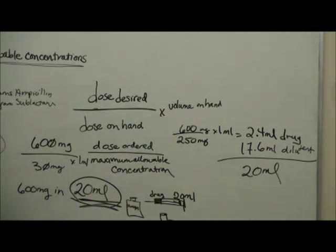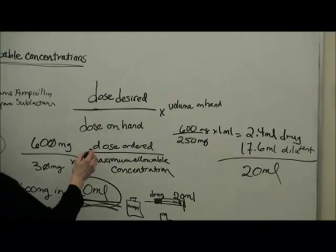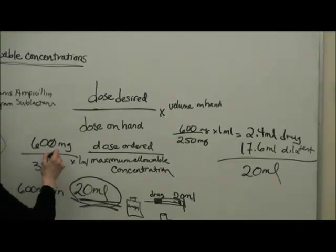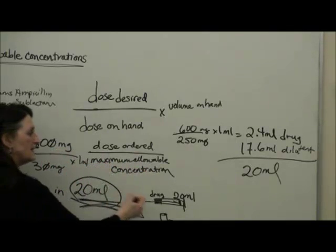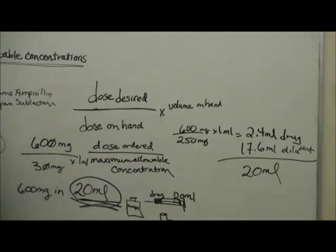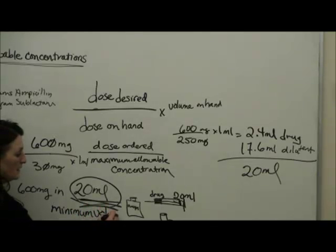And then if that drug needs to be further diluted, I take the ordered dose divided by what is the maximum concentration? And that gives me, this is the minimum volume that my drug must be diluted.